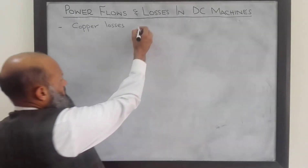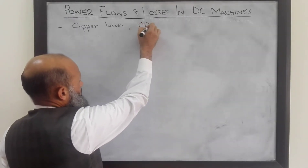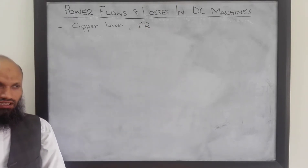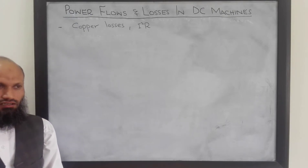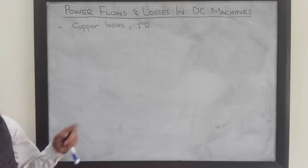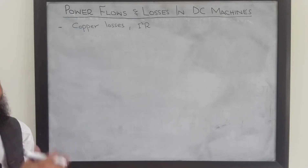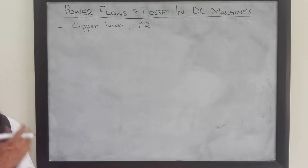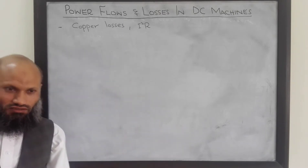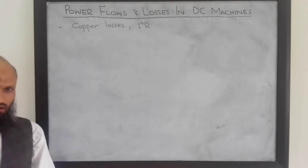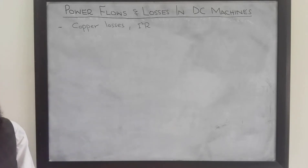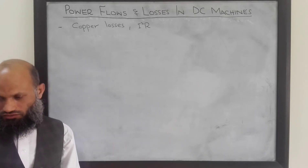Copper losses, also called I²R losses, are power losses due to the resistance of the armature windings and field windings. There are copper windings on the rotor of the DC machine and current flows through these windings, so although copper has very small resistance, some power losses still occur. In DC machines, you may have either permanent magnets or electromagnets; in the case of electromagnets, current flow through the windings also results in losses.